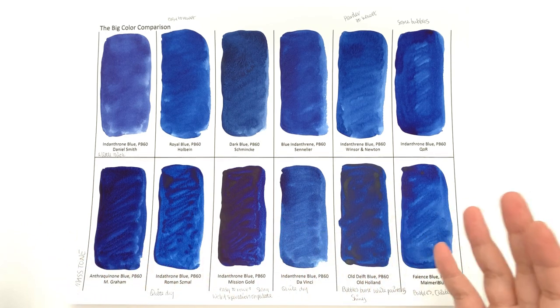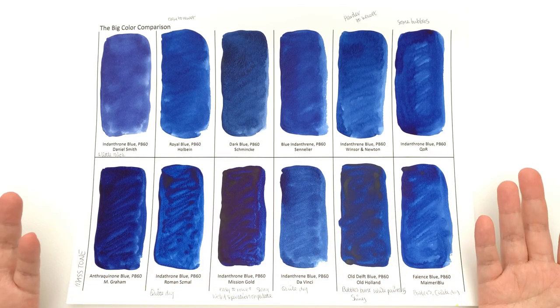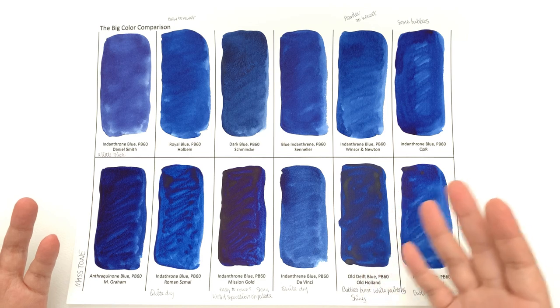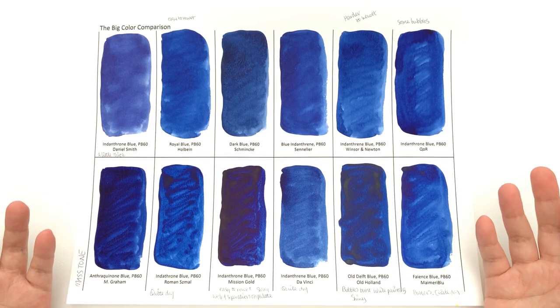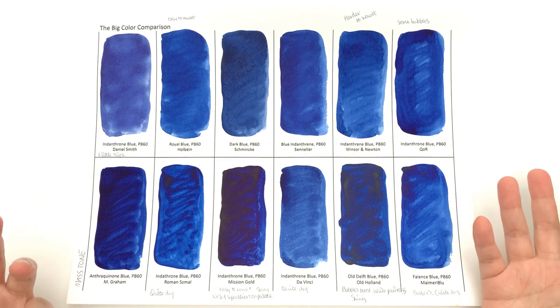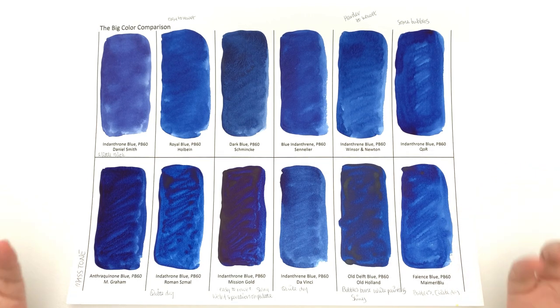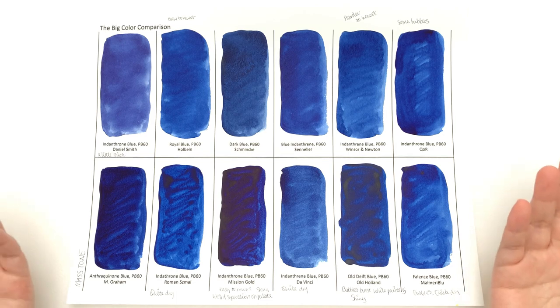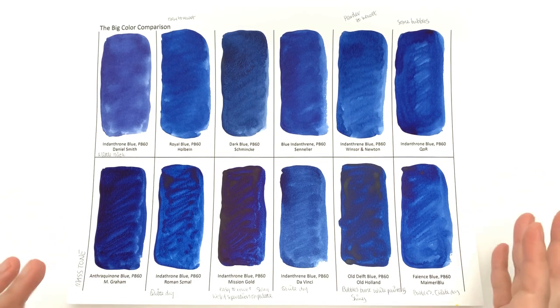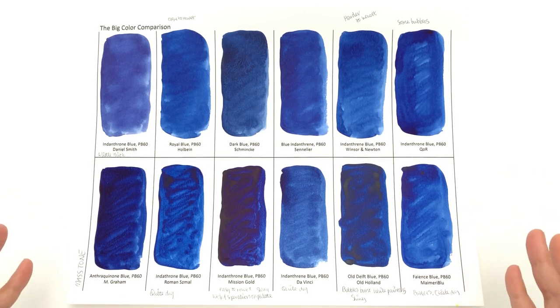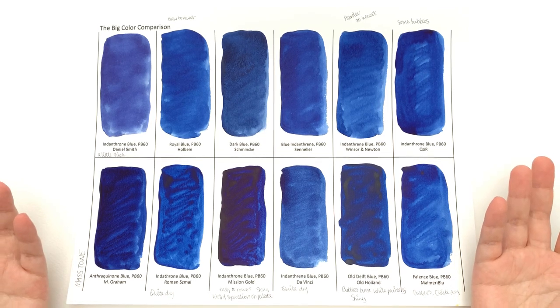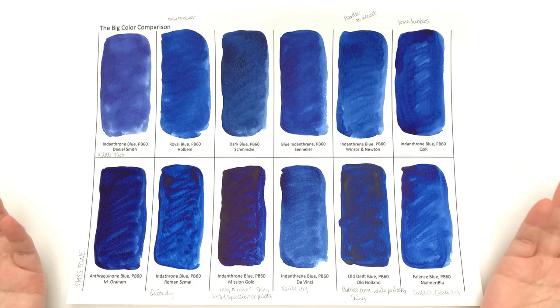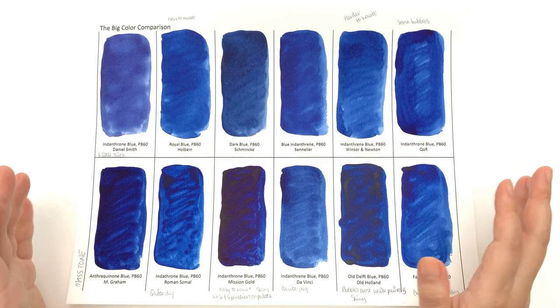Indanthrone Blue is going to be an episode where I have to go slightly stray off the design of this series, which is to compare colors that have the same name, only because Indanthrone Blue is one of those colors that different brands have different names for. If I just went with Indanthrone, we only have a few colors, so I thought it's better to just stick with PB60, which is what we all think of Indanthrone Blue, and collect colors that have PB60 and not stick to the name so much.